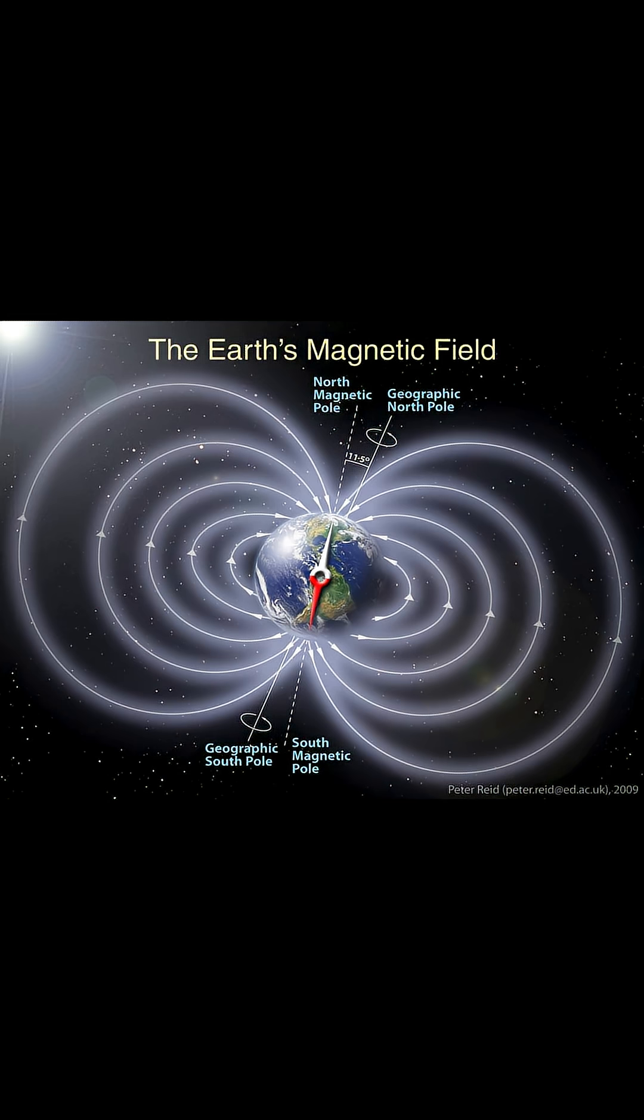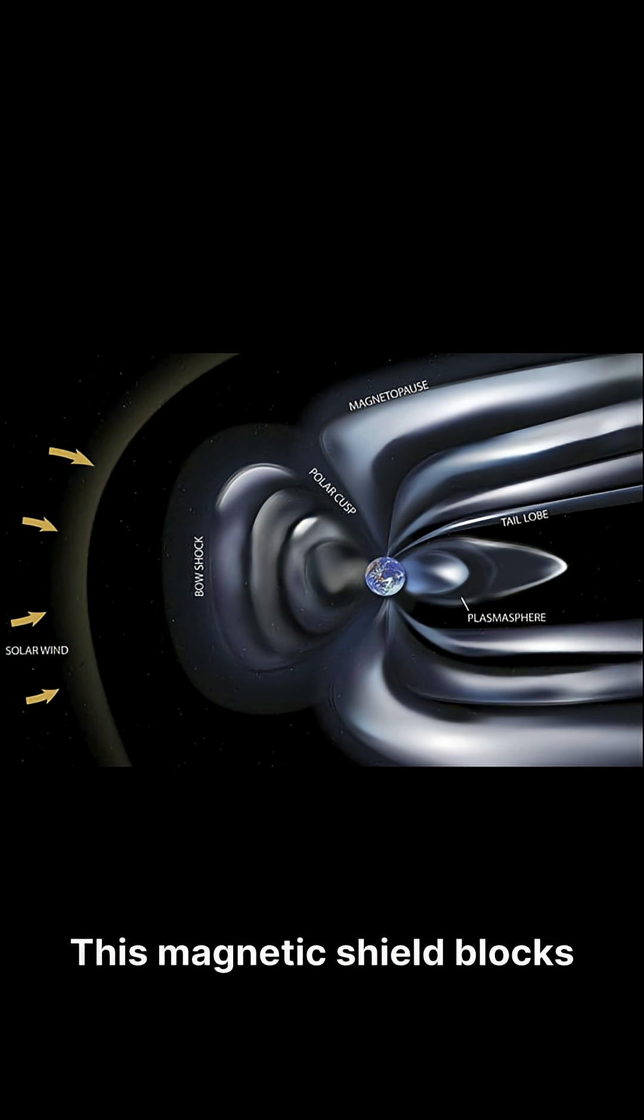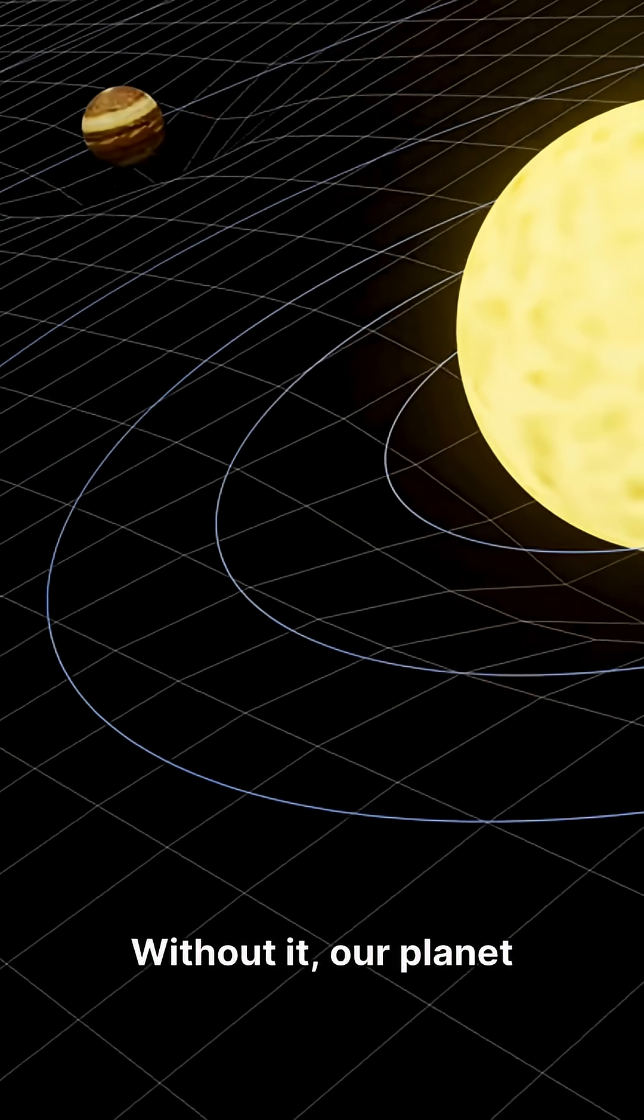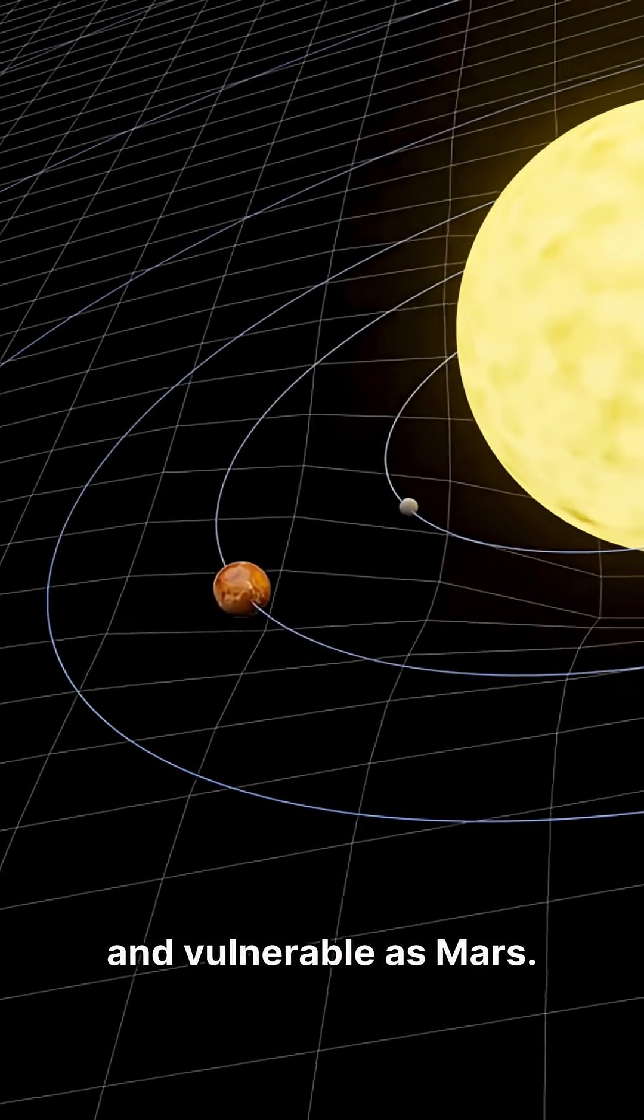For billions of years, Earth has been protected by a powerful, invisible force field. This magnetic shield blocks deadly solar radiation, protects our atmosphere, and keeps life safe. Without it, our planet would be as exposed and vulnerable as Mars.